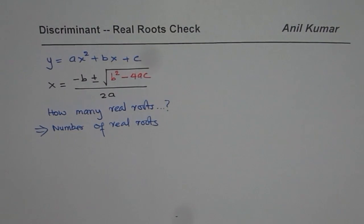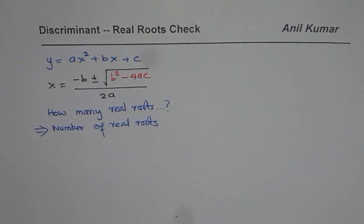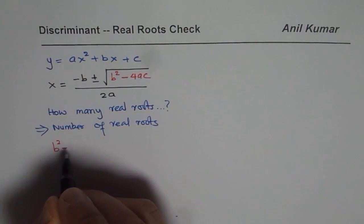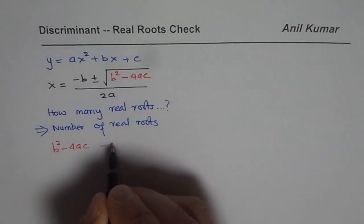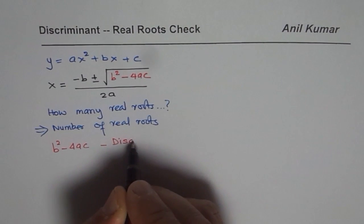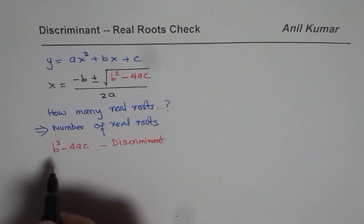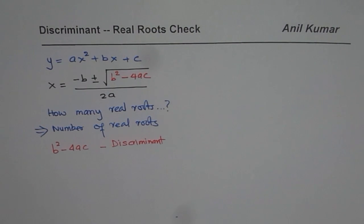In that case, what we have to do is analyze b squared minus 4ac. This term b squared minus 4ac is so important that we have a special name for it — we call it the discriminant. By analyzing whether this discriminant is negative, zero, or positive, we can find out how many real roots any quadratic equation will have.